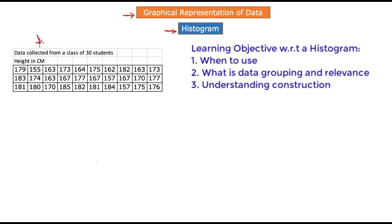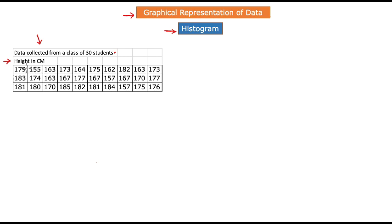We are going to learn all three of those using this data set. This is data collected from a class of 30 students, and we have recorded their height in centimeters. This is our variable under study, and the objective is to study the distribution of height of those 30 students in this class.